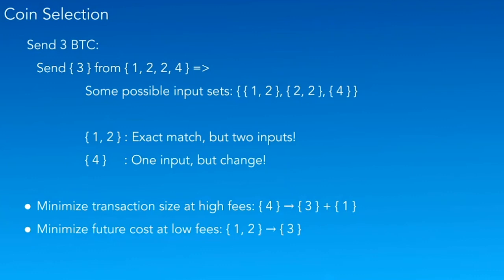On how practical UTXO management is for an average user versus institutions: it's sometimes a little complicated, but you can do a lot with heuristics. Bitcoin Core has had coin control for a long time, letting you select exactly which inputs to use. Privacy-focused wallets like Wasabi and Samourai do more. Electrum had both a private and an economic coin selection mode. But privacy and economy are often at odds — you either optimize for as cheap as possible or as private as possible.